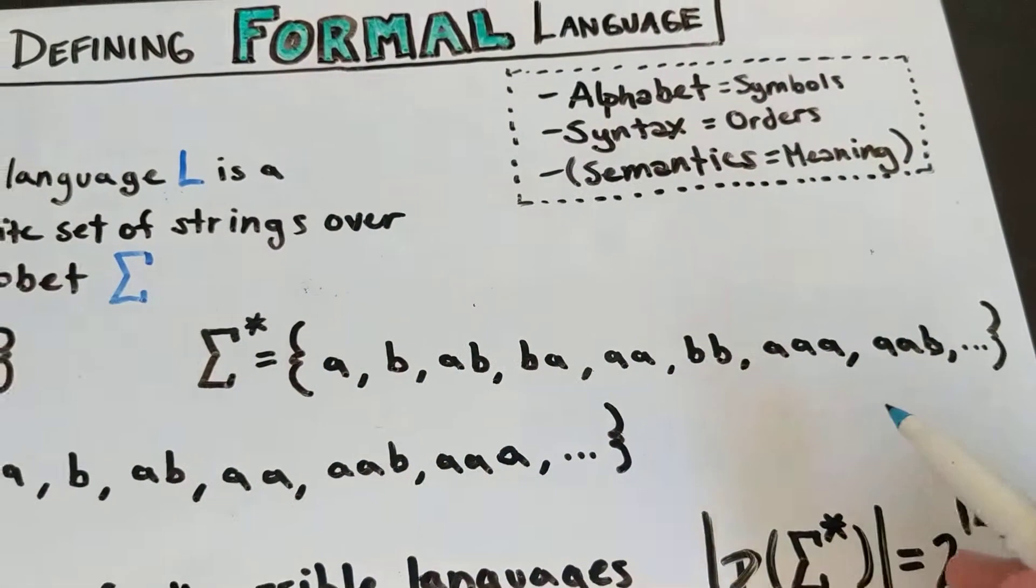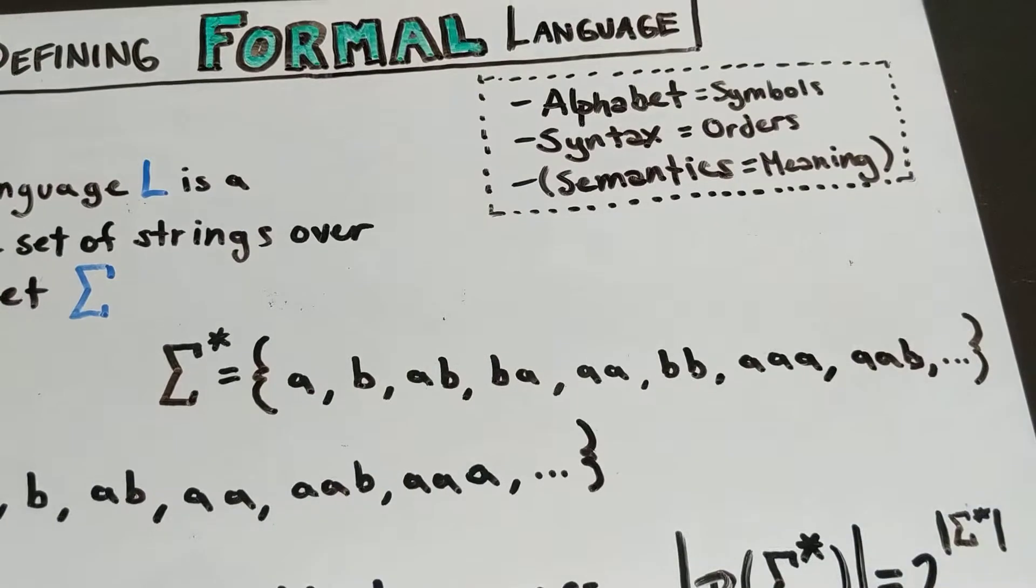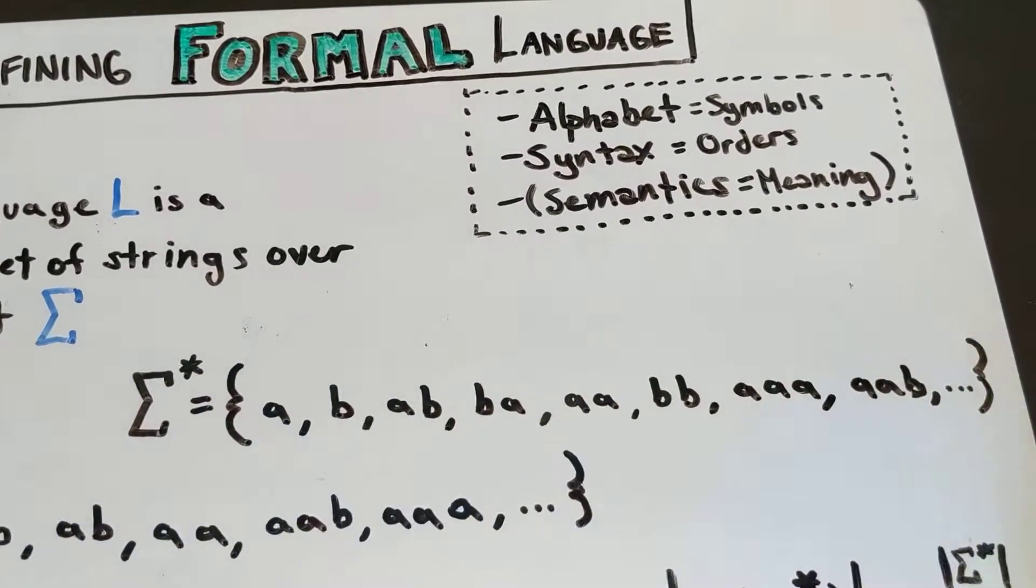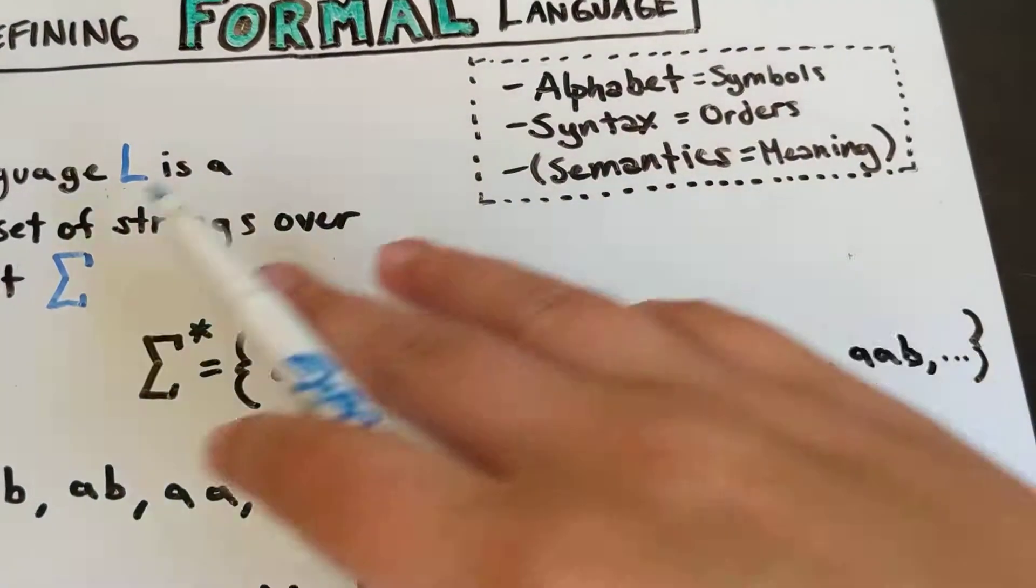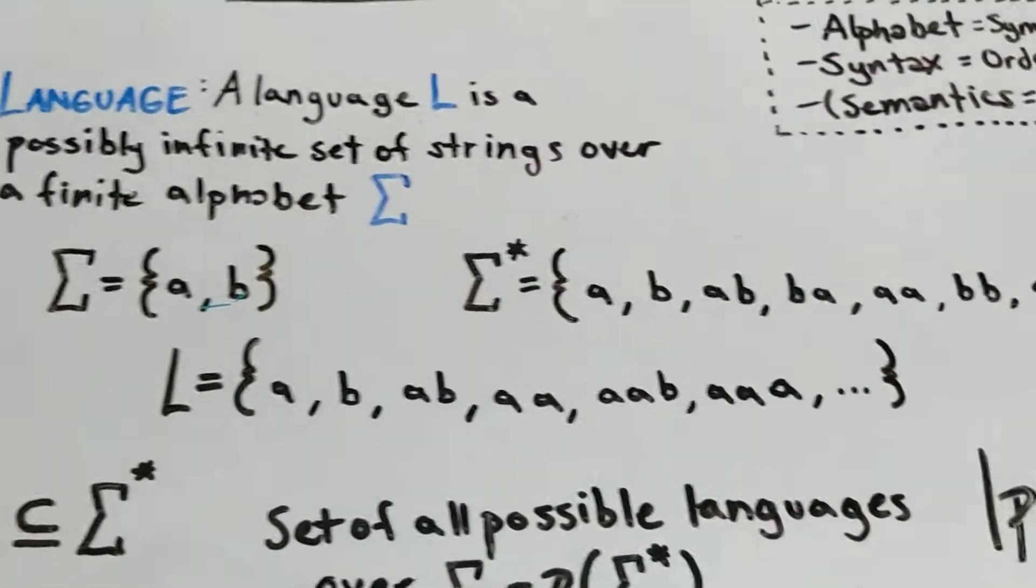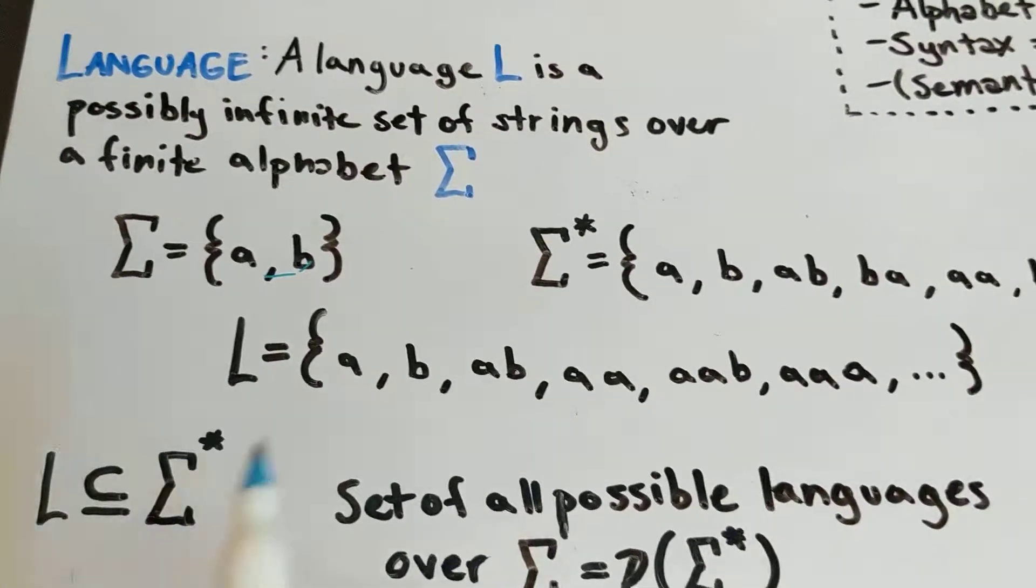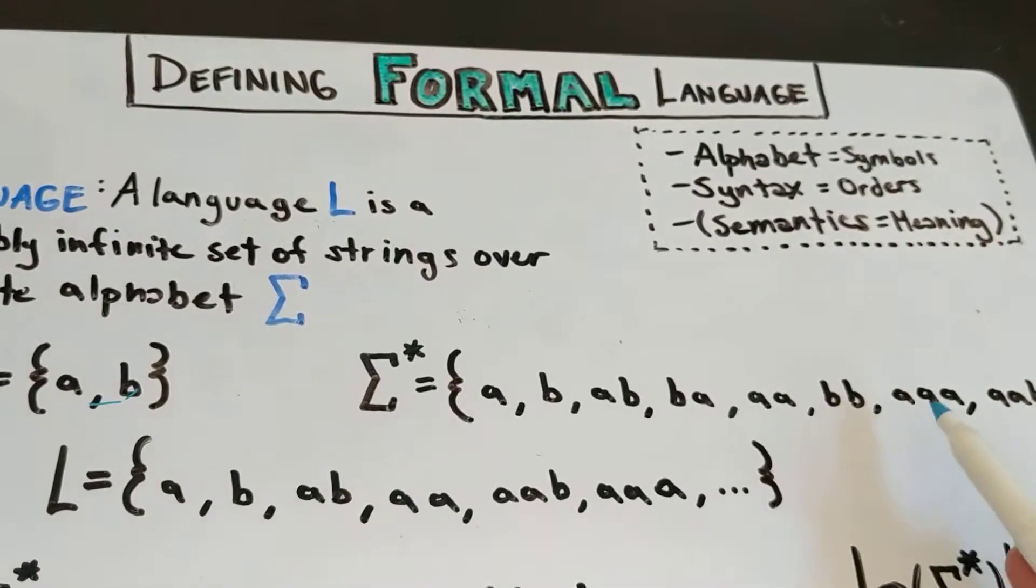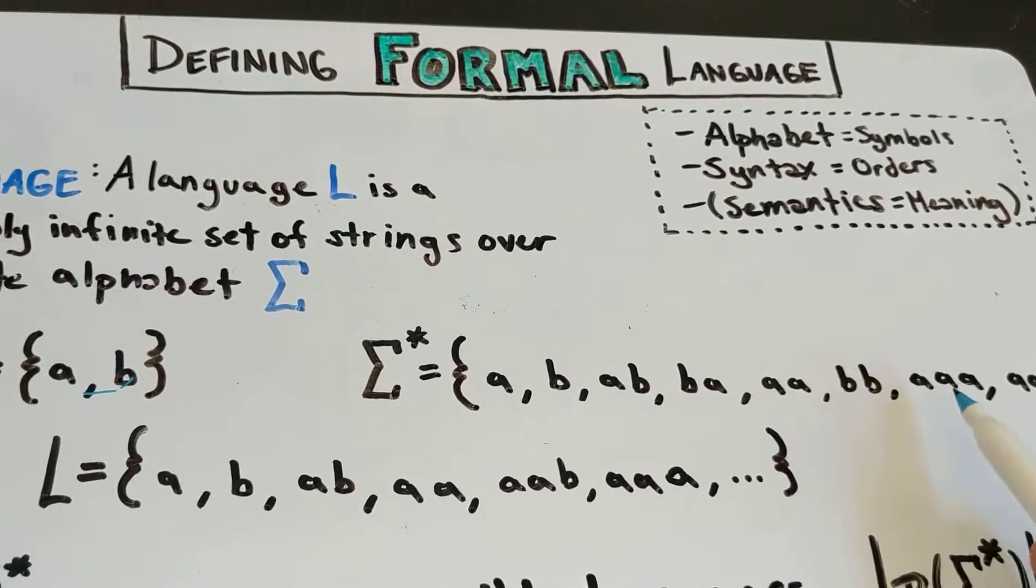Now, that would be an infinite set, because you can just keep on adding A's at the end, or B's, or A's and B's at the end, and it will create an infinite set. Your language can also be an infinite set, but still not contain every single option that is in sigma star.